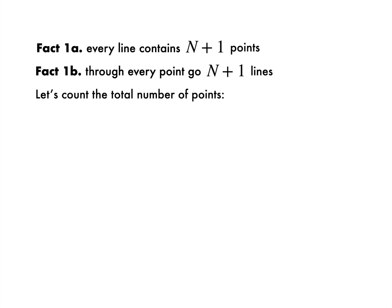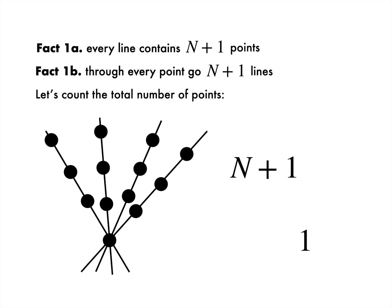Let's now count the points and lines, or in other words, how many symbols and cards you will want to have. Take a point, so one point so far. Out of it come n+1 lines. On each of these lines, there are n other points because one of them has already been counted. So we have an additional n+1 lots of n points.